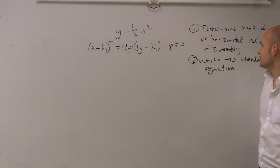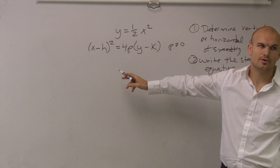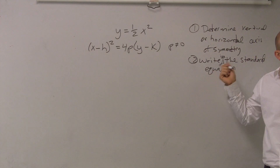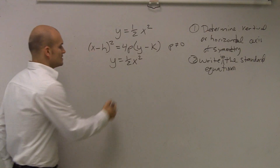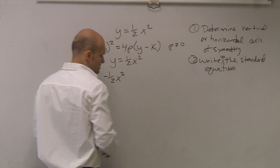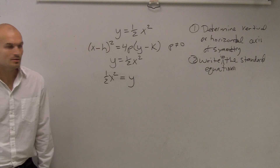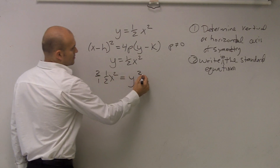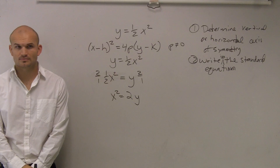So now what we need to do is write the equation. Does this problem look anything like the standard form? No, it doesn't. So I want to rewrite it in that form. I'll take y equals one half x squared and swap it around. So one half x squared equals y. Multiplying both sides by 2, I get x squared equals 2y. Everybody follow me so far?